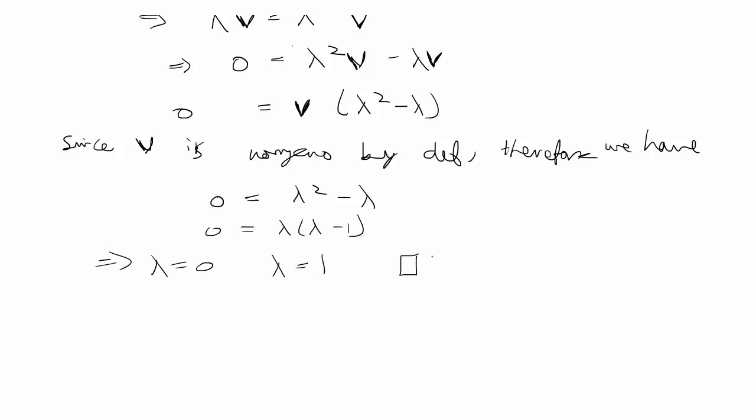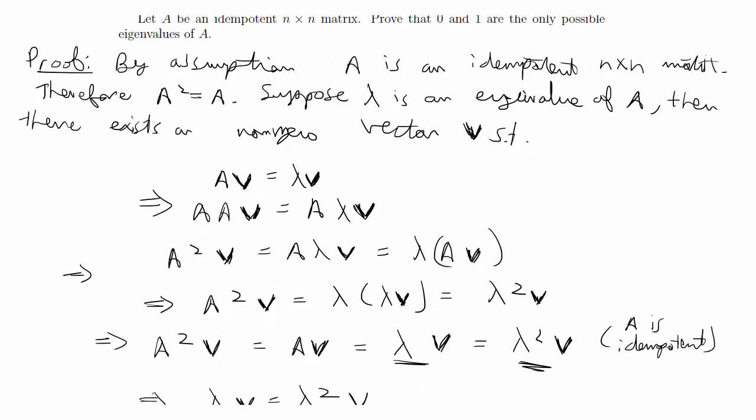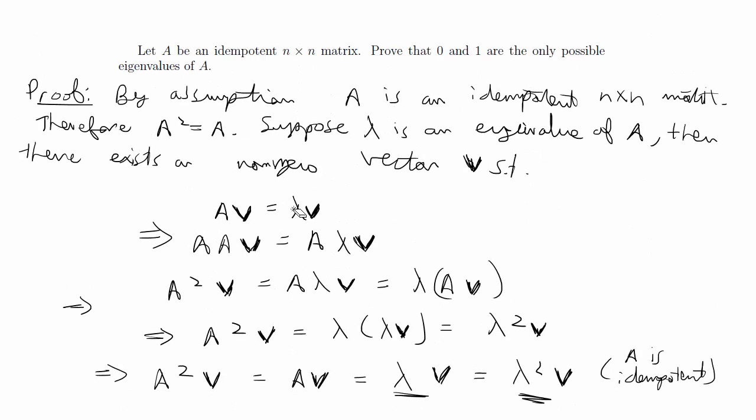That's enough for our proof. It wasn't a very difficult proof. You basically just had to remember the simple definition of what it means to have an eigenvalue and an eigenvector for a matrix, and you had to know what idempotent meant, but besides that it was pretty straightforward.